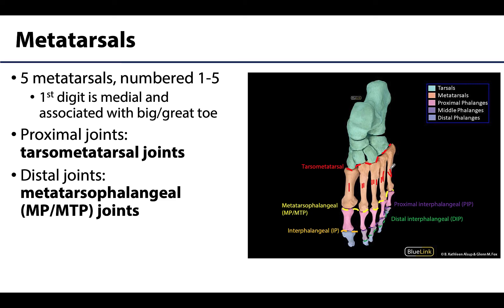The metatarsals articulate with four of the distal tarsals at the tarsometatarsal joints, and distally the metatarsals articulate with the proximal phalanges at the metatarsophalangeal joints, which are very often abbreviated as MP or MTP joints.